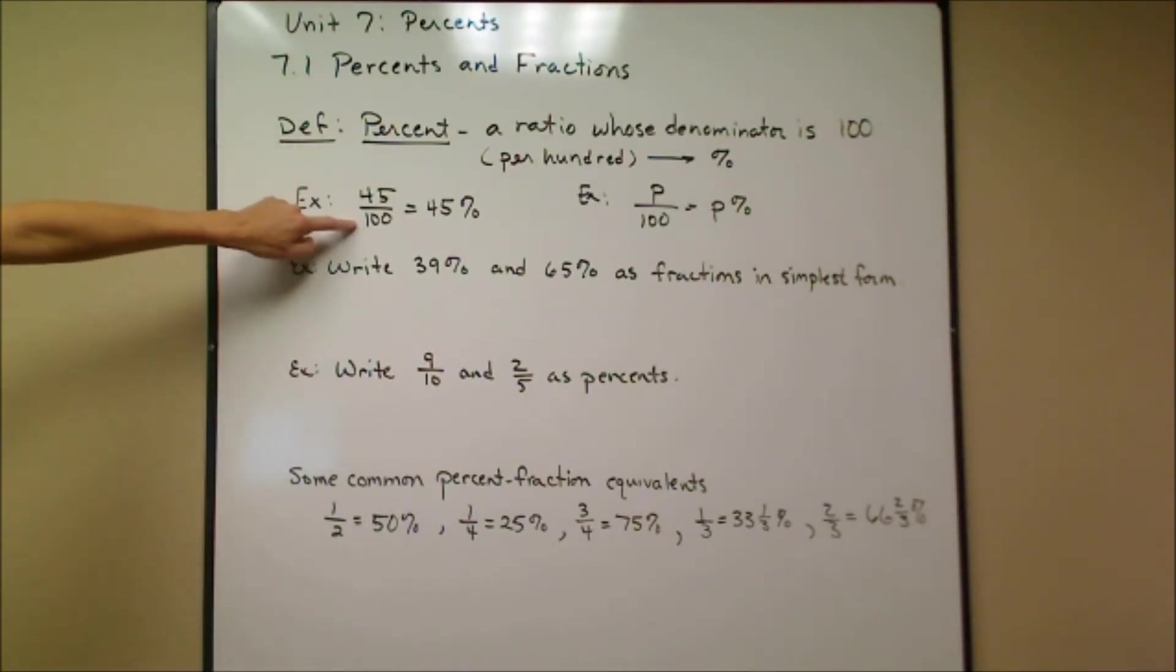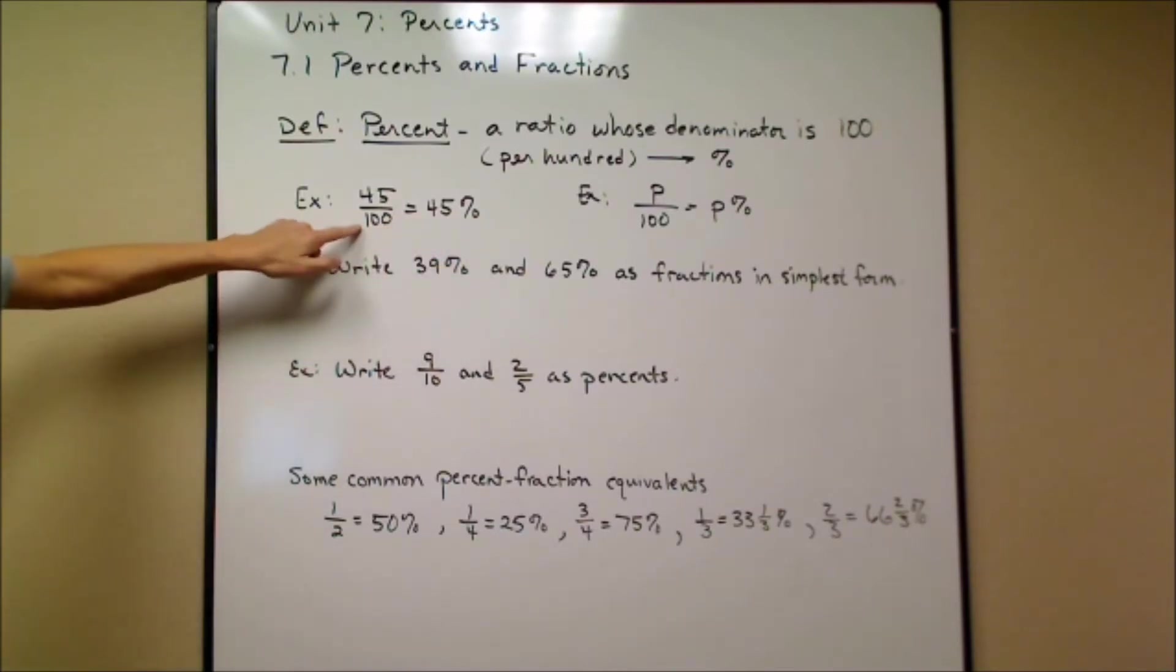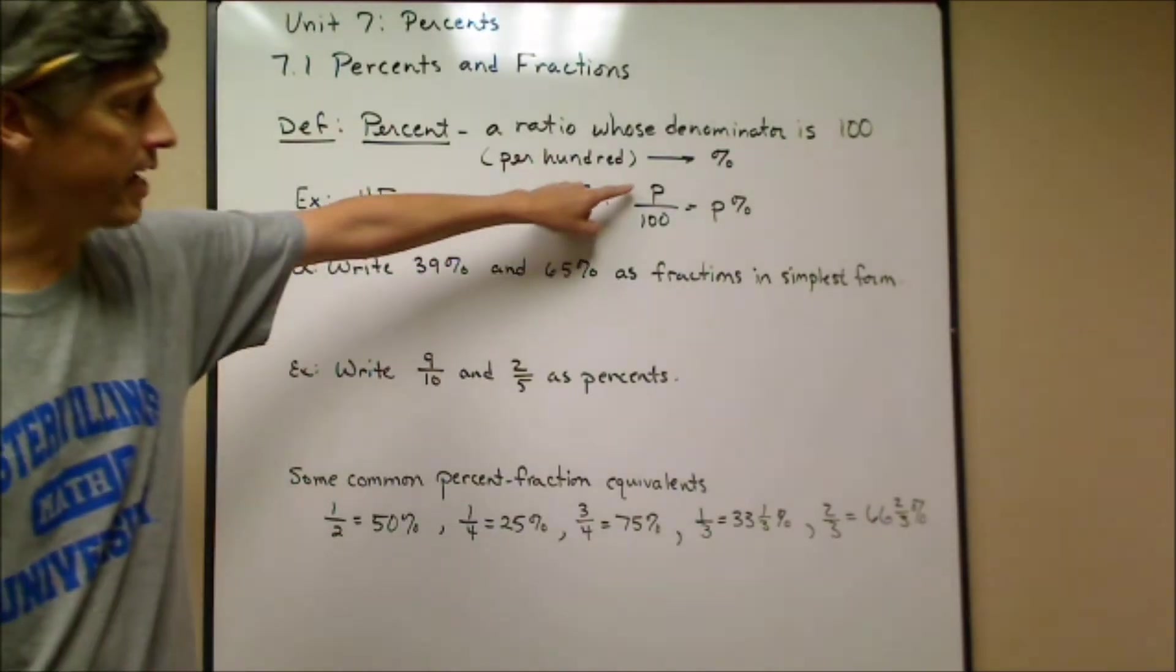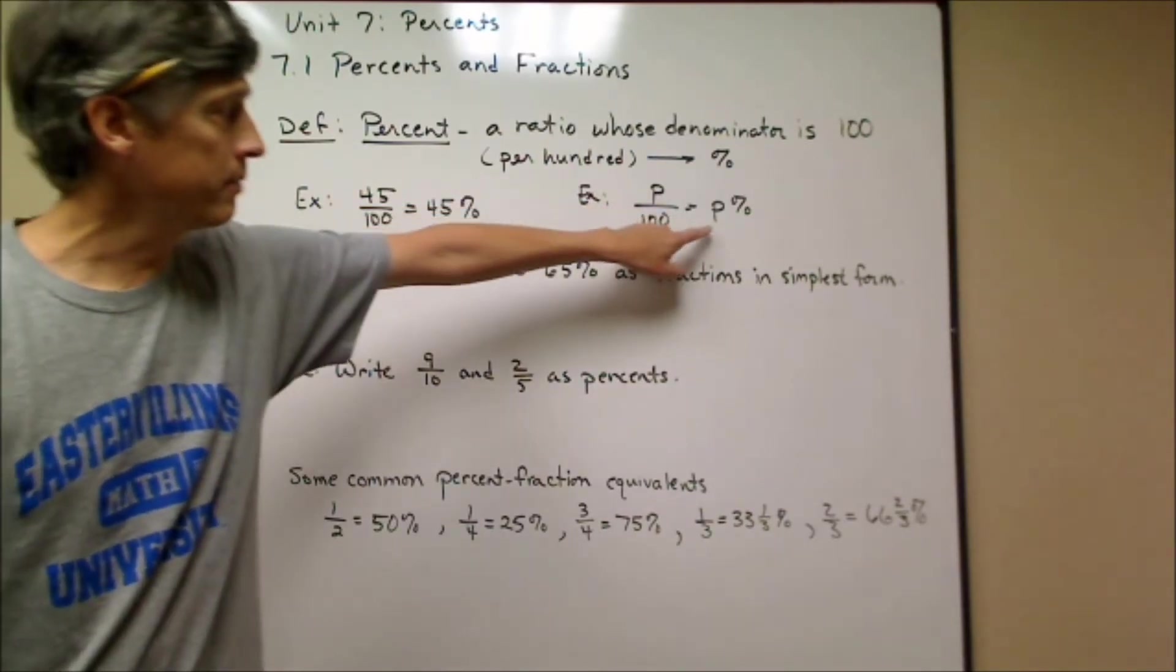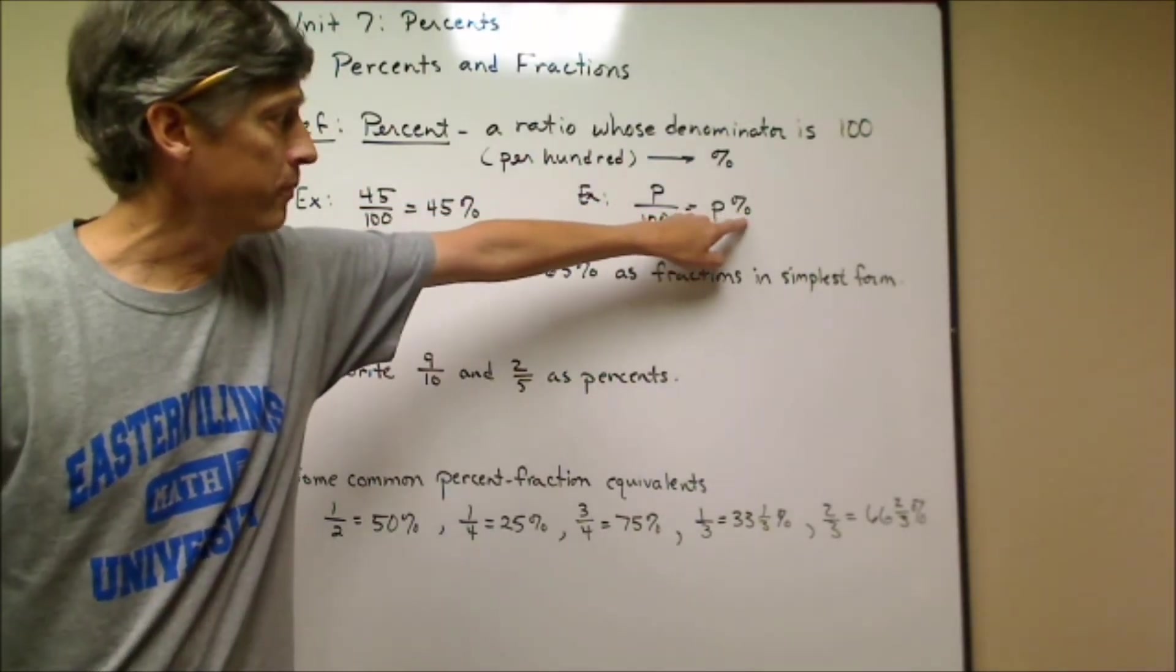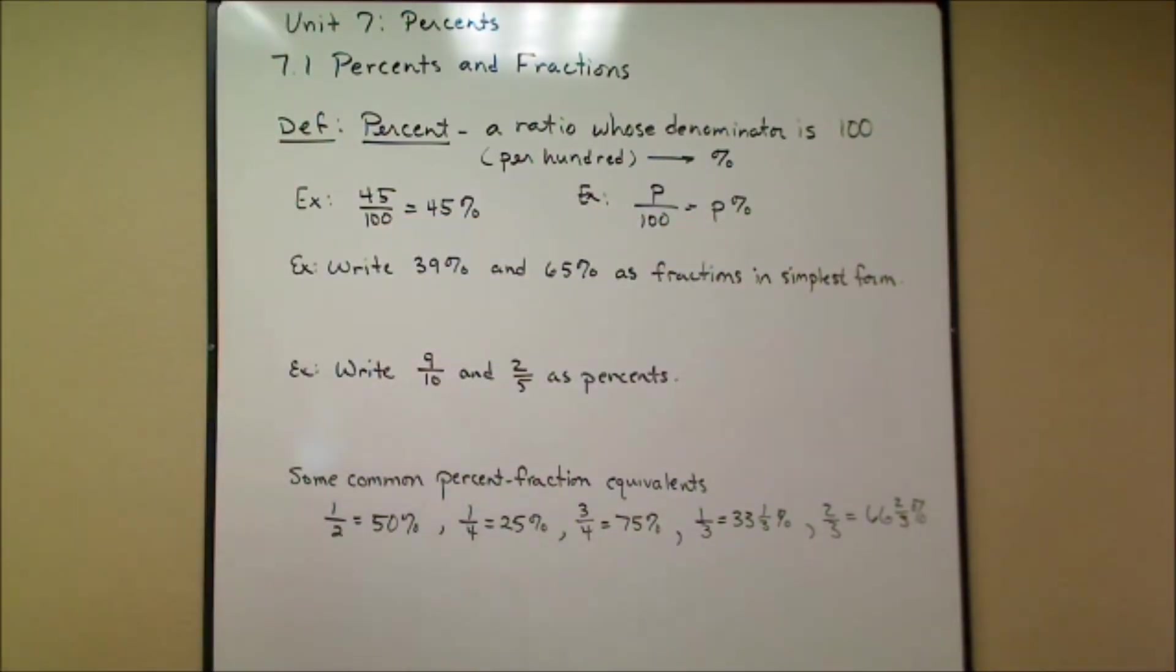'Cent' means 100, so 'percent' means per 100, and we use this symbol to represent percents. If I have 45 over 100, this ratio 45 over 100—my denominator is 100—that's a percent. I write it as 45%. That percent sign means over 100. If I have P over 100, that variable with that percent sign represents the same statement: this is P percent, P out of 100.